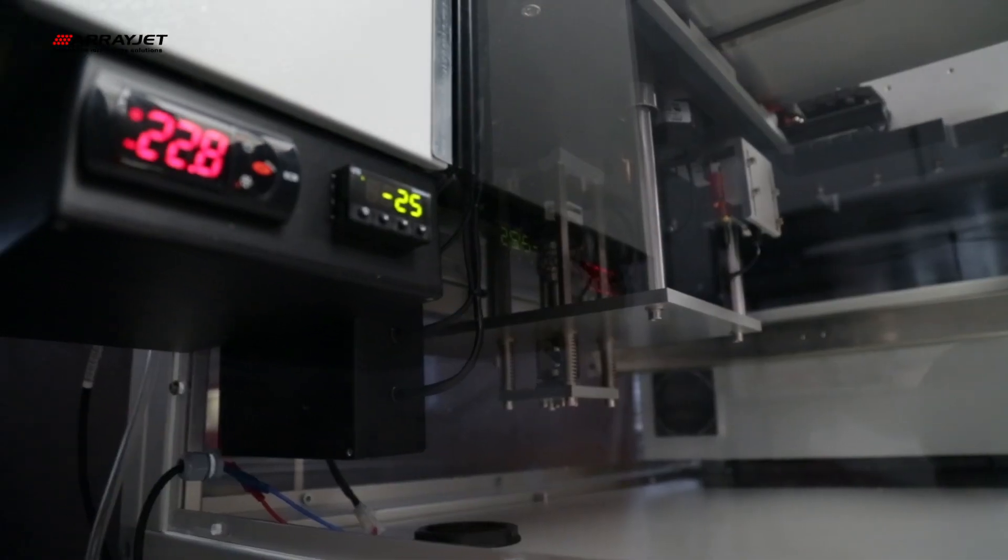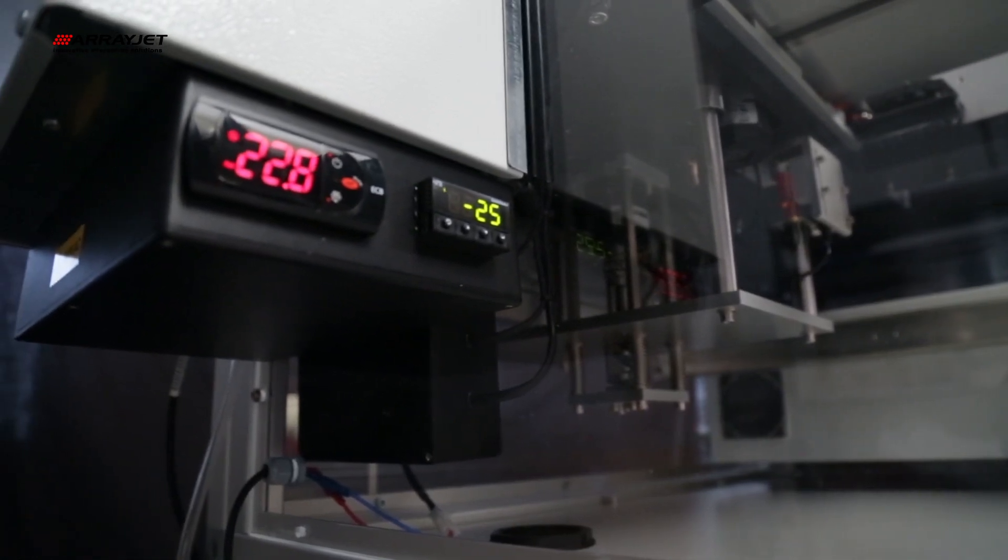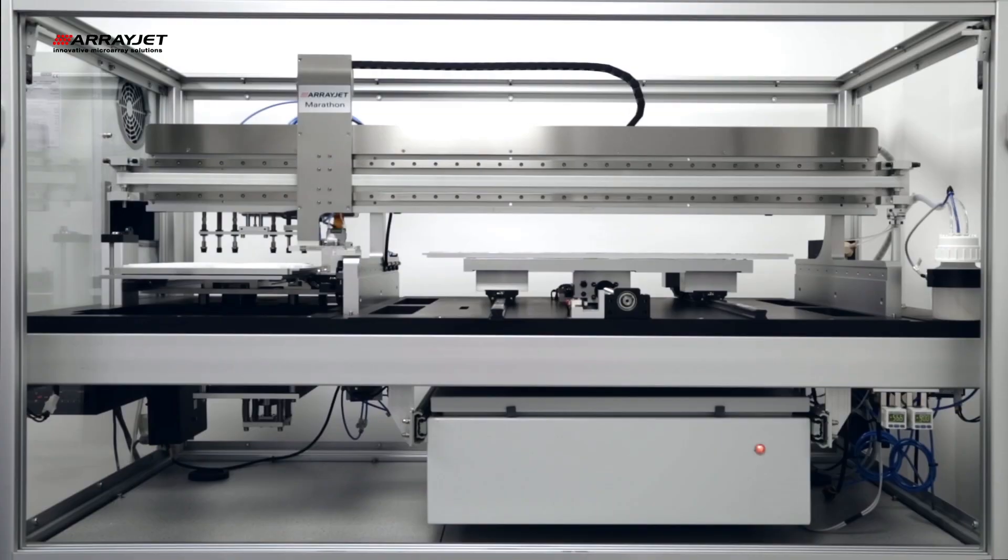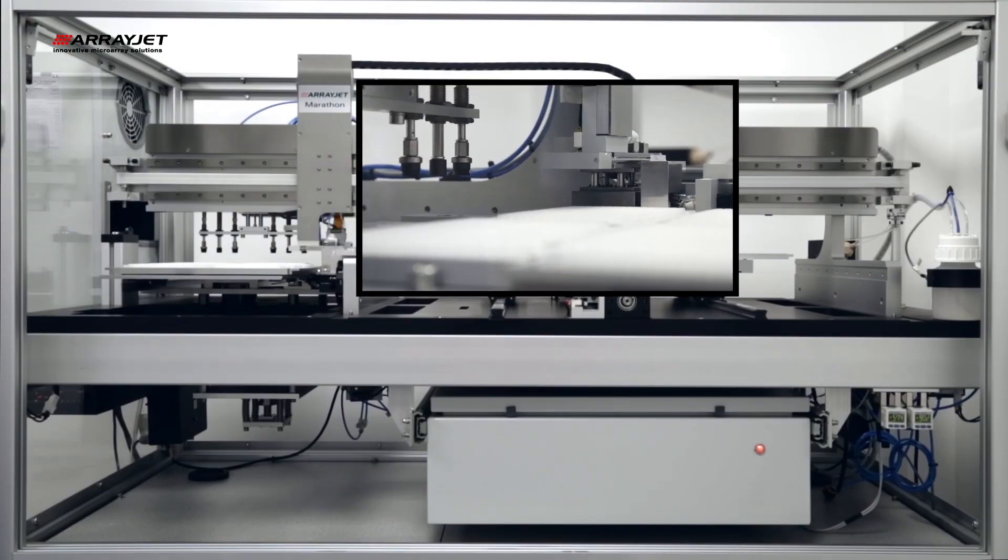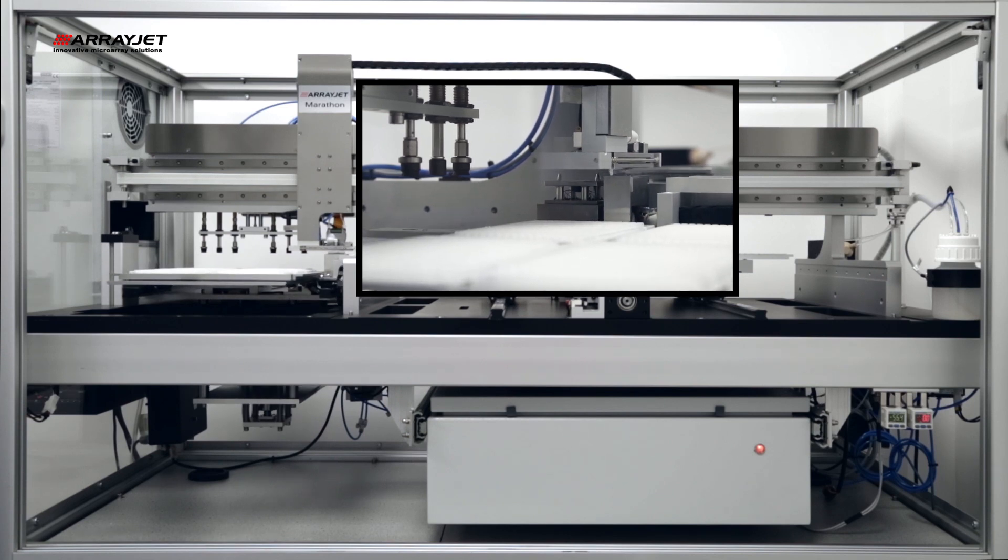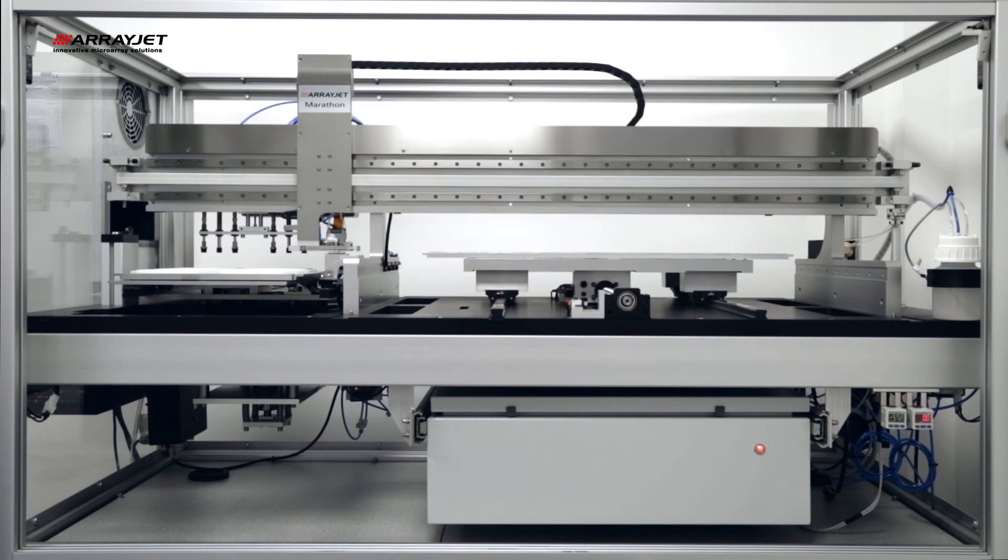ArrayJet's jetmosphere ensures complete temperature and humidity control throughout the printing process. After printing each set of probes, the printhead and jet spider undergo comprehensive and validated wash processes to eliminate cross-contamination.